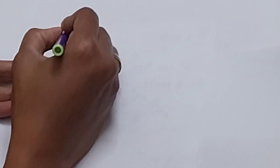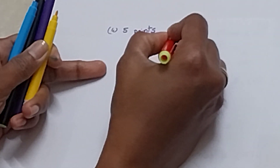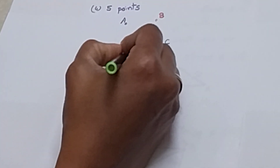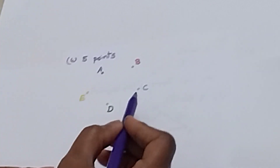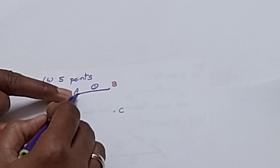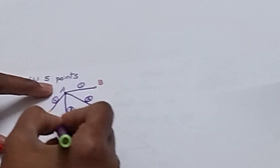Now we do the 4th problem: 5 points. We take 5 points — A, B, C, D, and E. We take one point and try to connect all remaining points. I connect A to B: one line. A to C: 2nd line segment. A to D: 3rd line segment. A to E: 4th. A is connected with all 4 points, so A is completed.